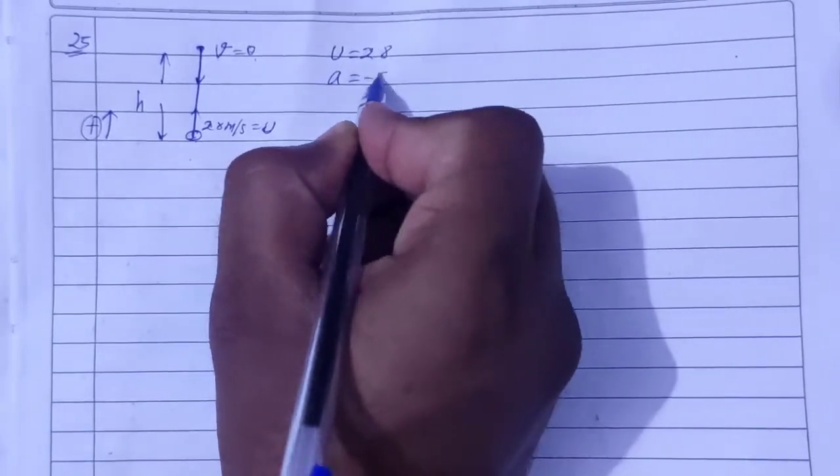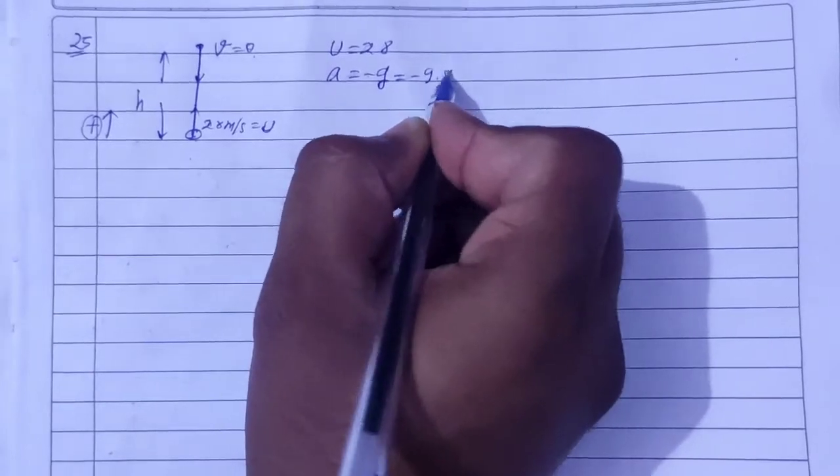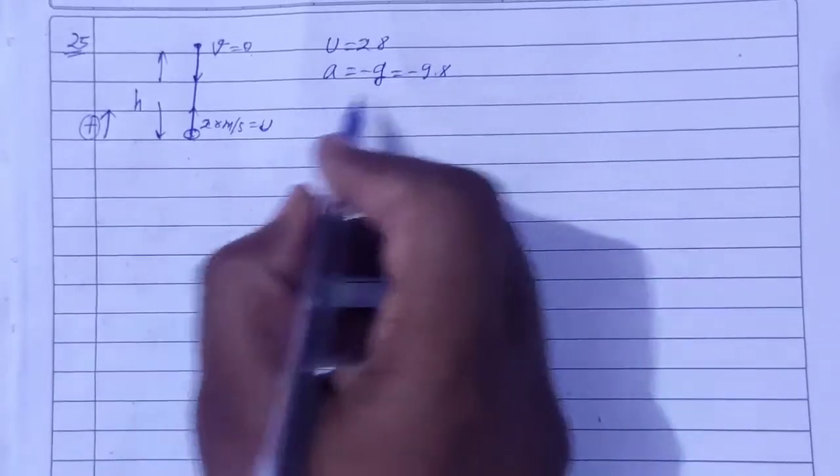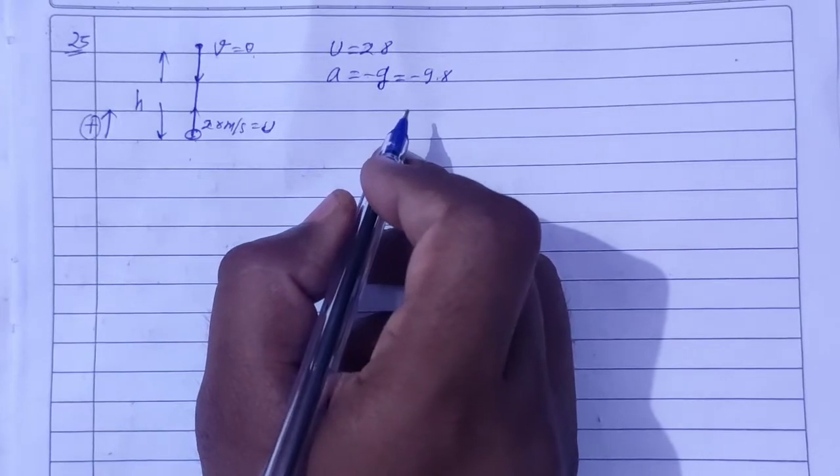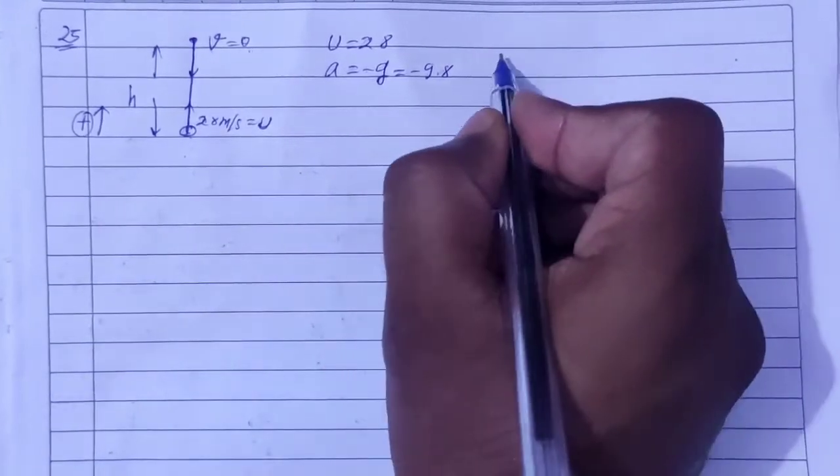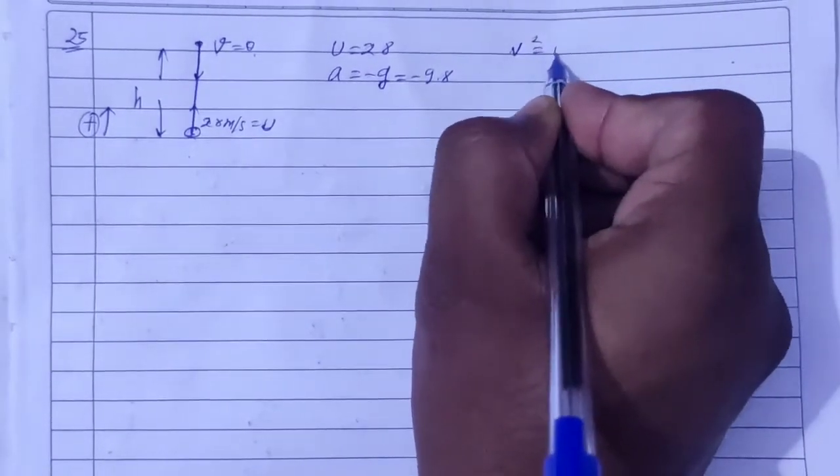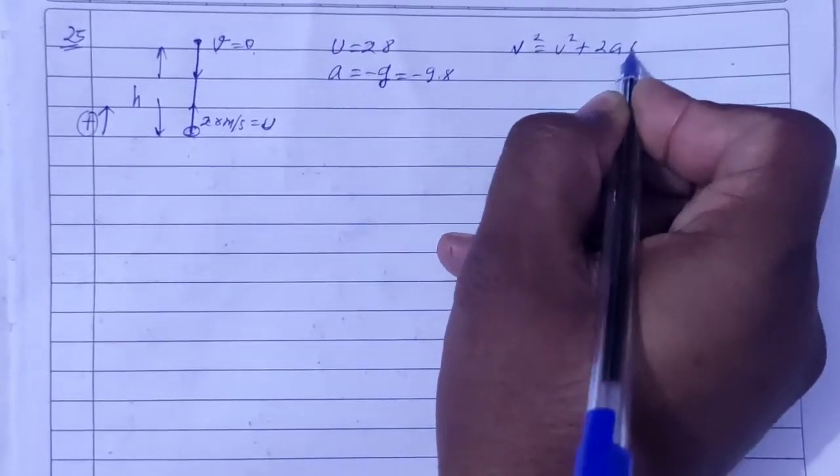Acceleration is downward, so a = -g = -9.8 meter per second squared. For the first question, find the maximum height. To find maximum height, we use Newton's third equation: v² = u² + 2as.